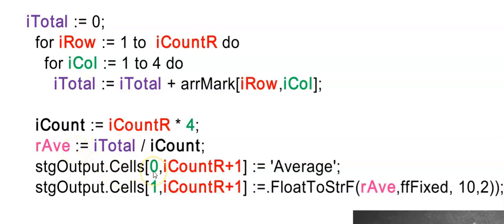Here I'm adding the label to column 0, just one cell below my two-dimensional array, where I'll see the average. And in column 1 in the same row I'll display the variable I calculated above.